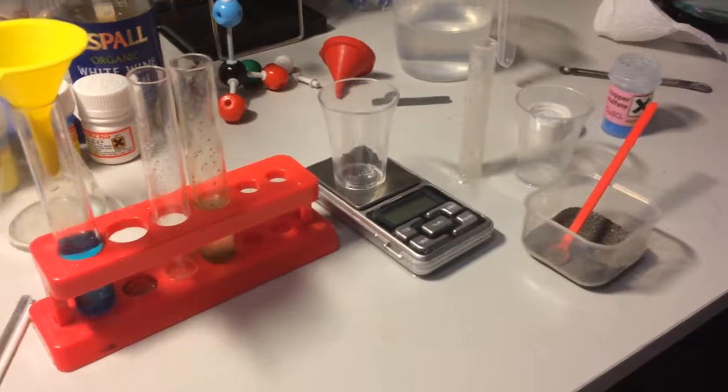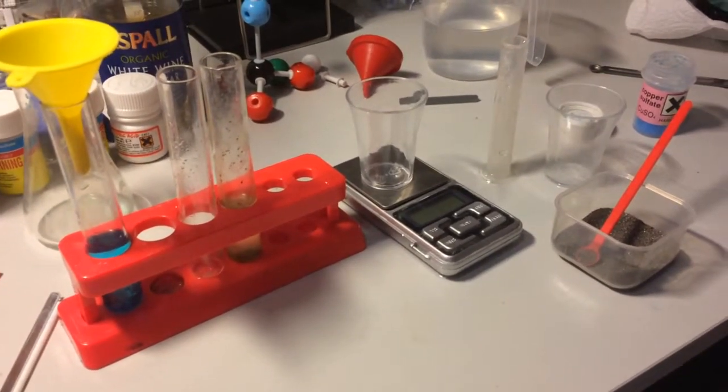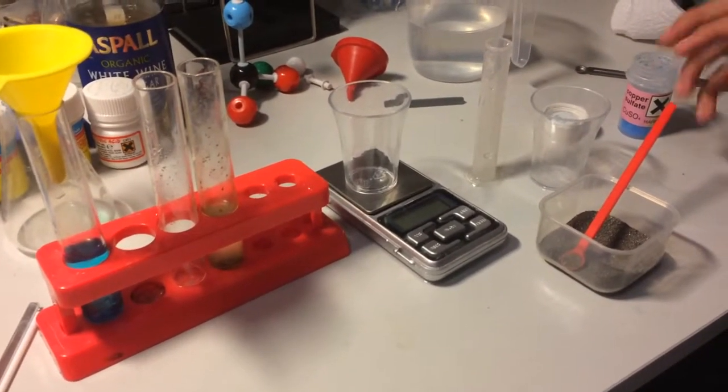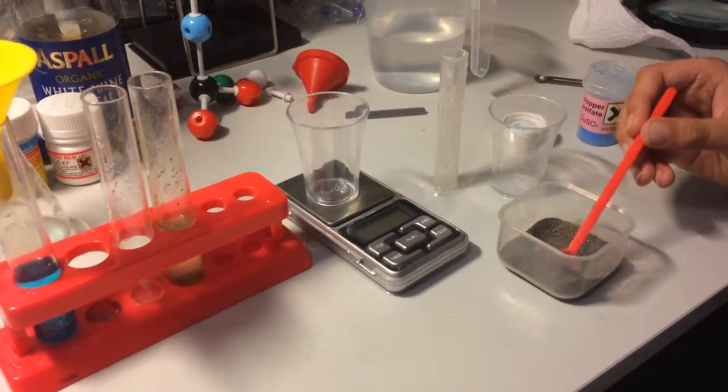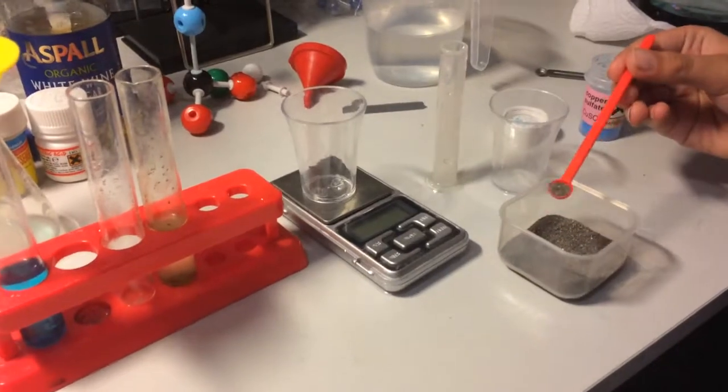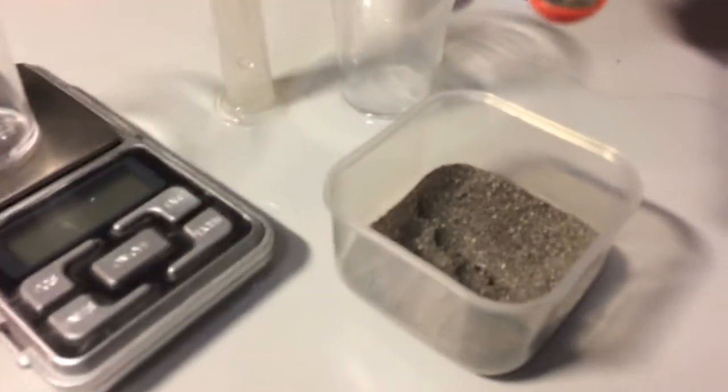Now that we have measured the temperature of the copper sulphate solution, we can now measure the amount of iron filings that we need, which in this case is 3 grams. Notice how its color is grey.